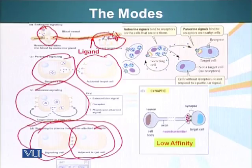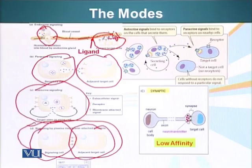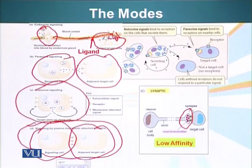There's also synaptic signaling, which occurs between a nerve and a target cell — generally a gland cell or a muscle cell. These signaling molecules have very low affinity for the receptors, so as soon as they are released, they attach to the receptor quickly and are then taken back up by the cell that produced them. Here, an axon releases a molecule into the synapse, the receptors on the target cell bind the ligand, read the signal, and act accordingly.